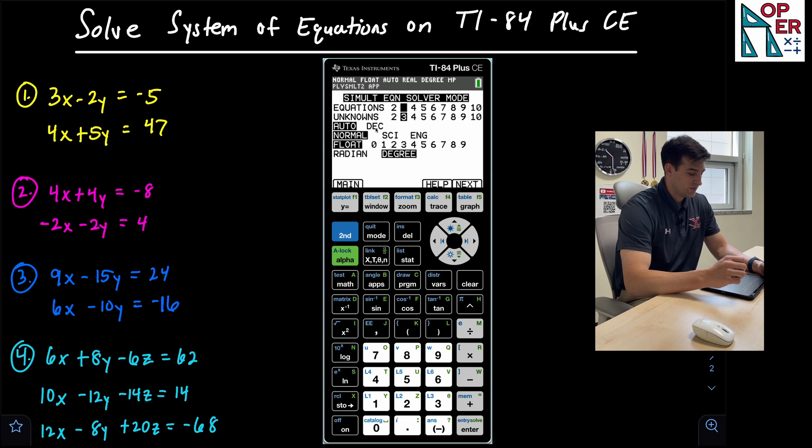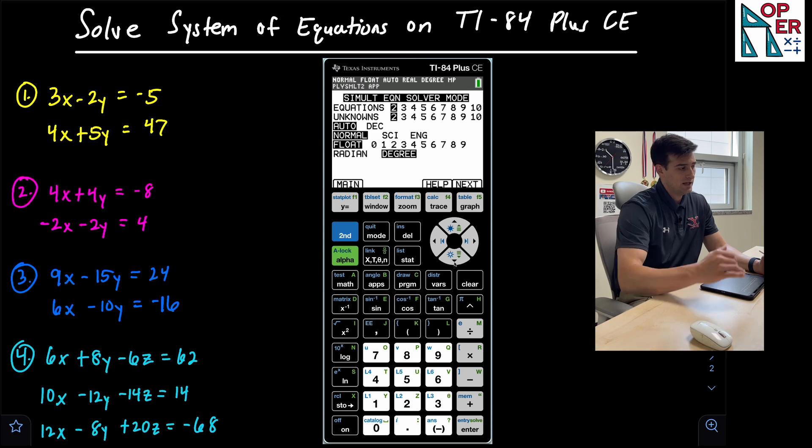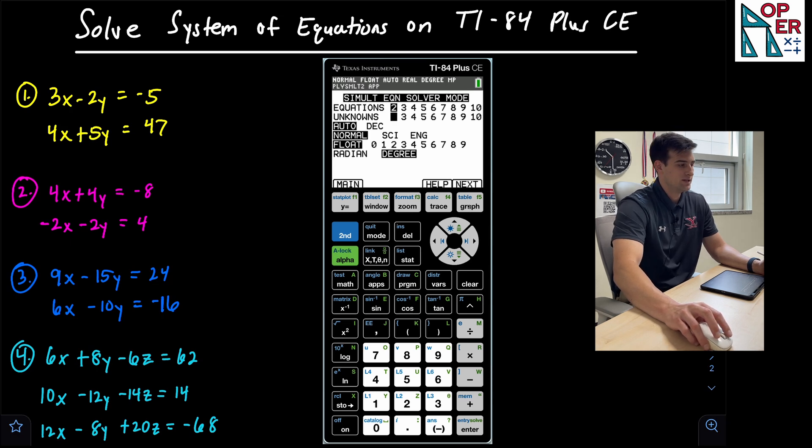For our first three examples, we just have two equations and two unknowns or two variables. So right now it's on three. I'm going to go over to two and I'm going to hit enter. I'm going to go down to two for unknowns and hit enter. Now the rest of the options I'm going to leave as is. And once we have that set up, we're going to hit the graph button because that corresponds to this tab on the screen that says next.